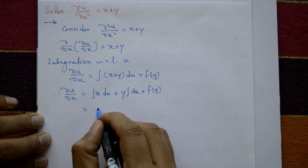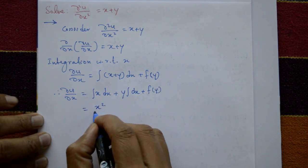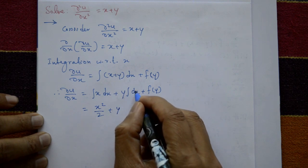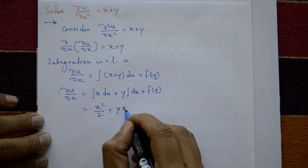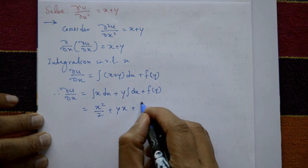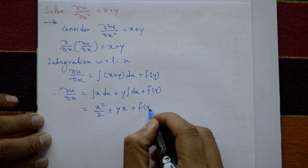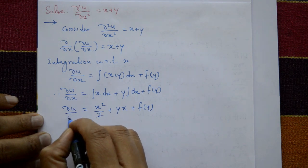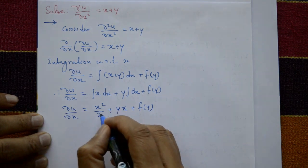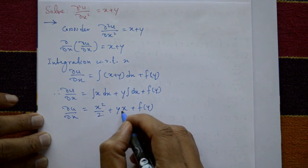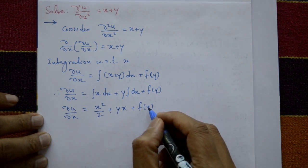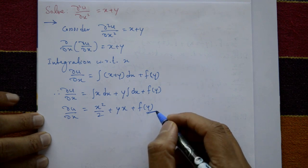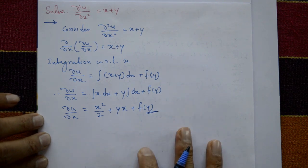Now integrate: x integrates to x²/2, and y remains as is, with integration of 1 giving x. So after the first integration we get: ∂u/∂x = x²/2 + yx + f(y), where f(y) is an arbitrary function of y.